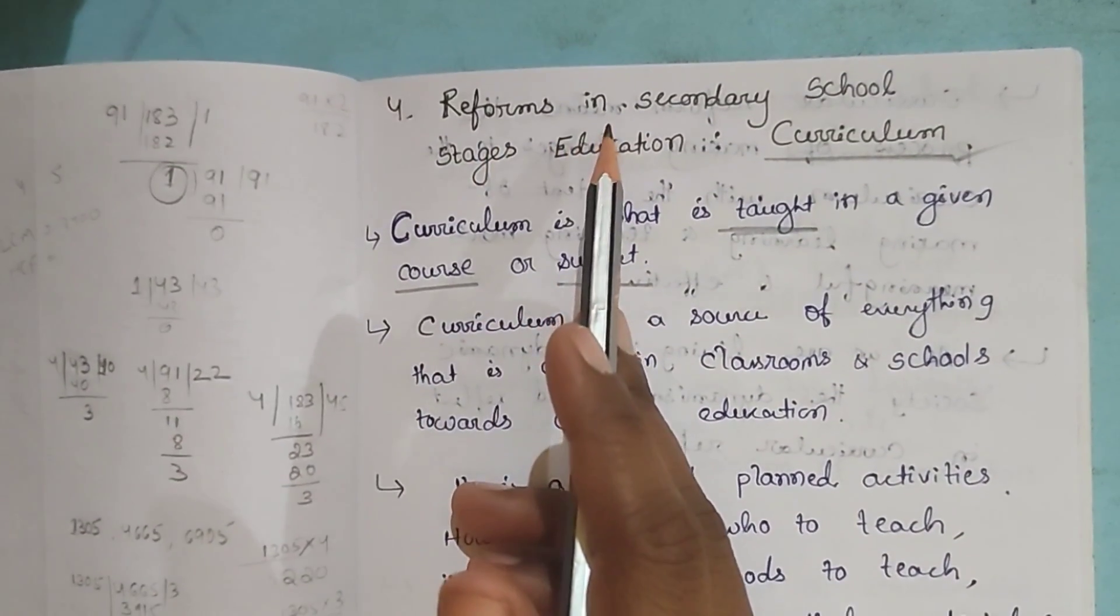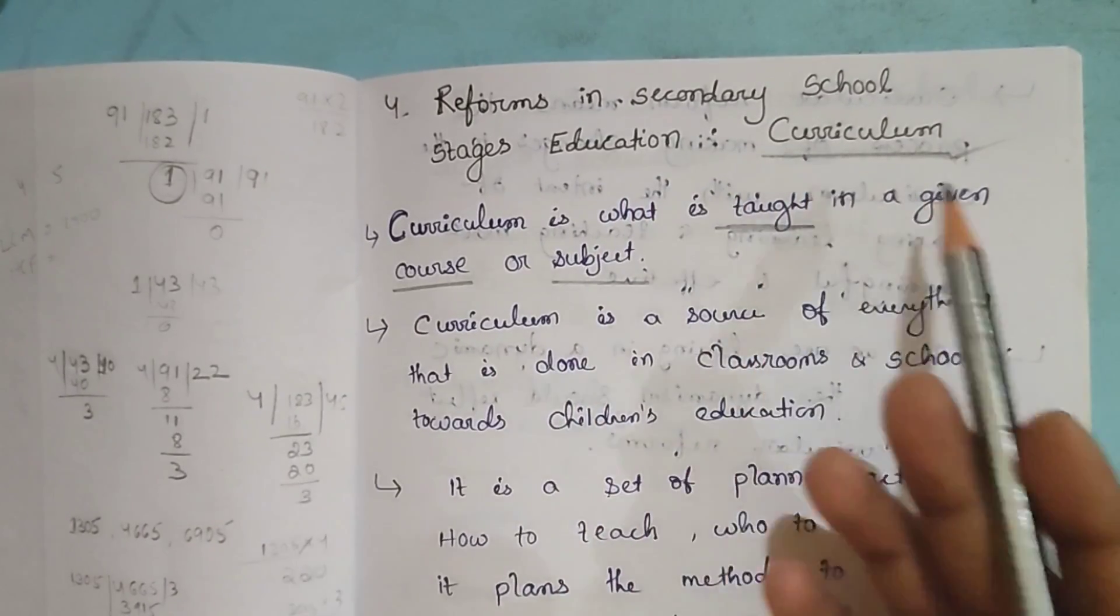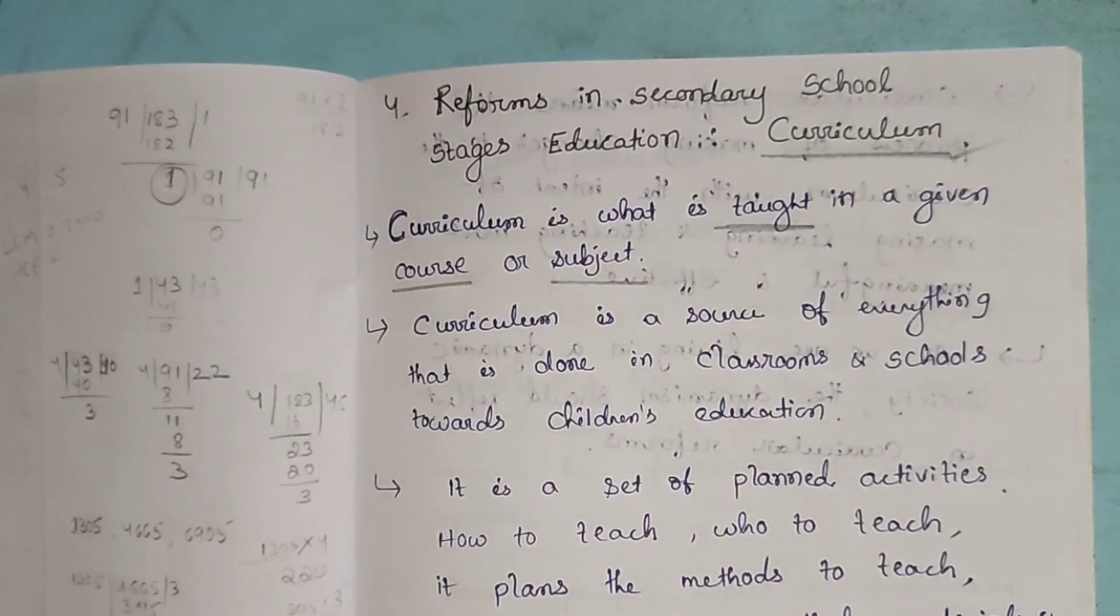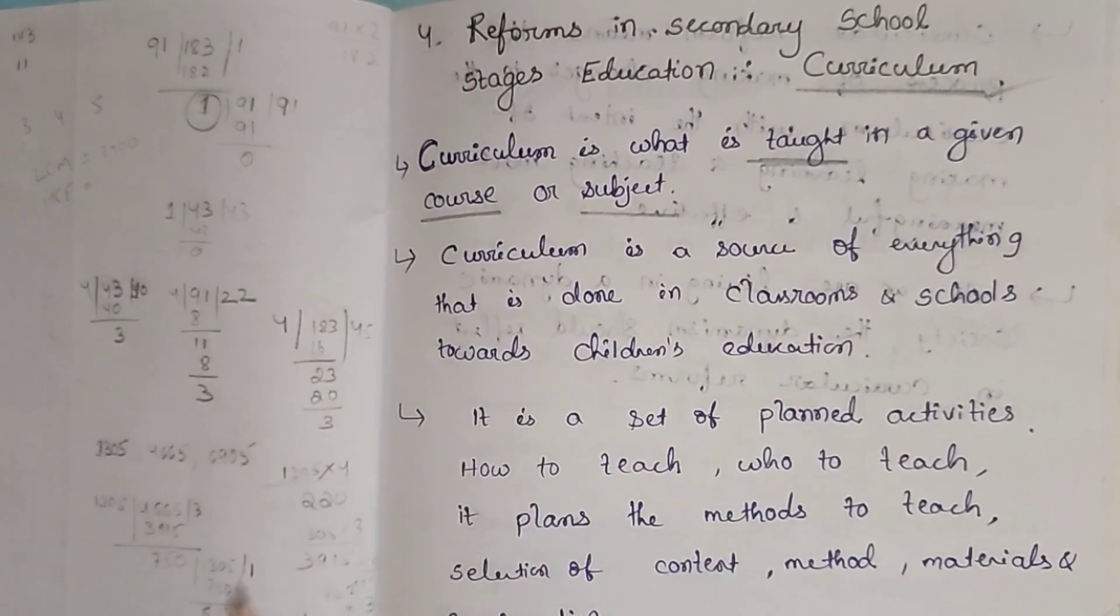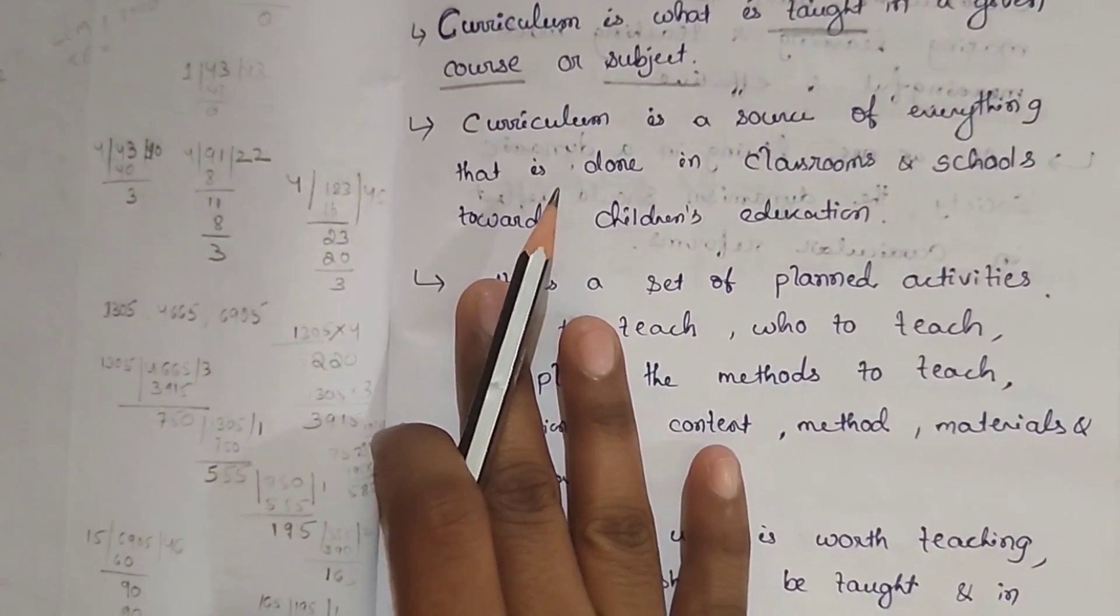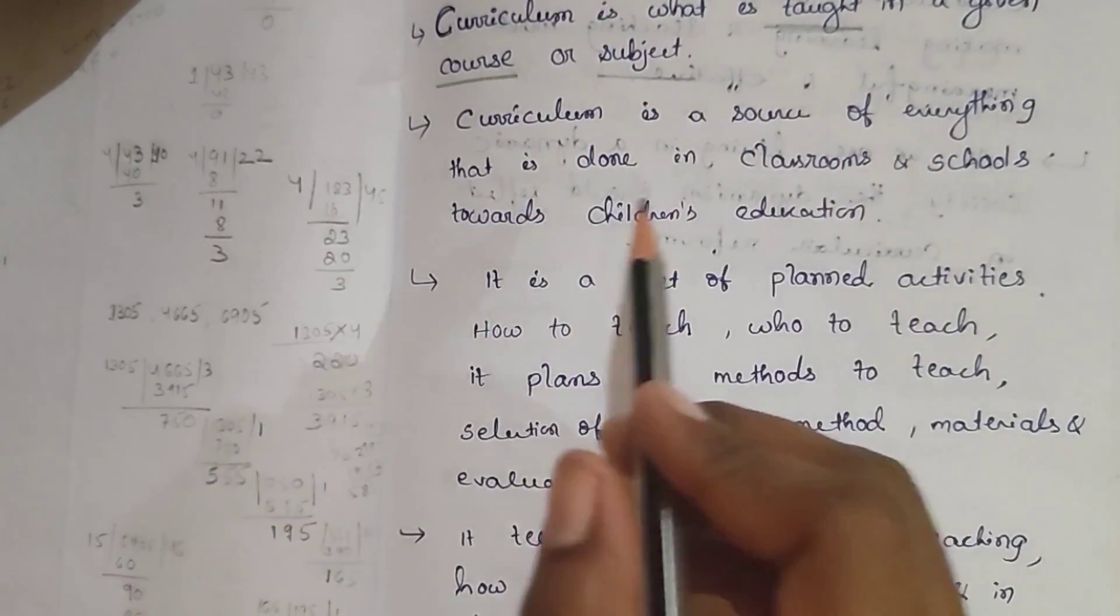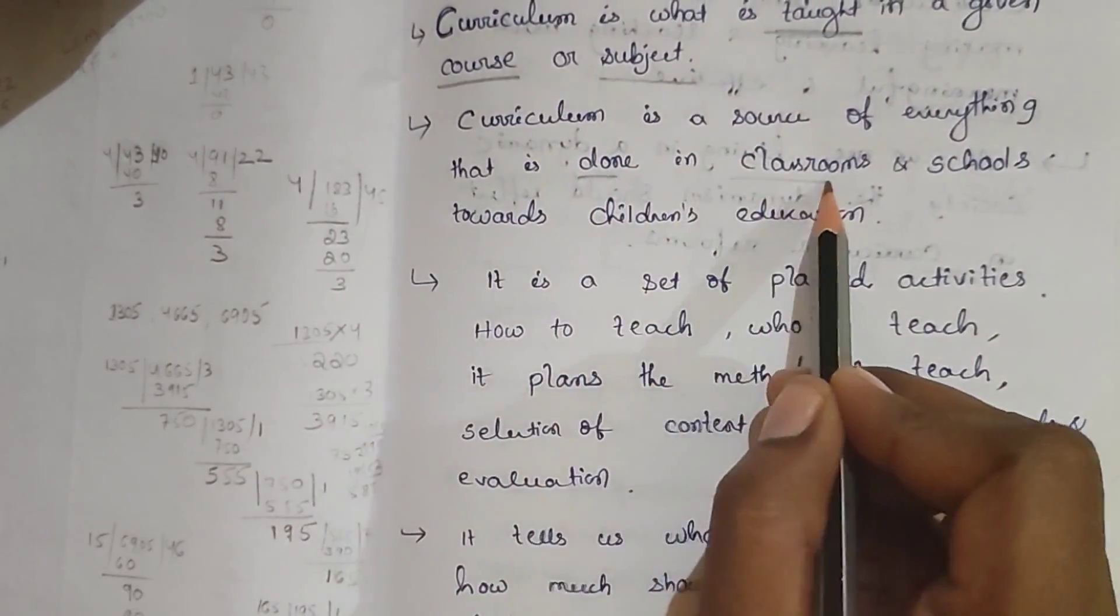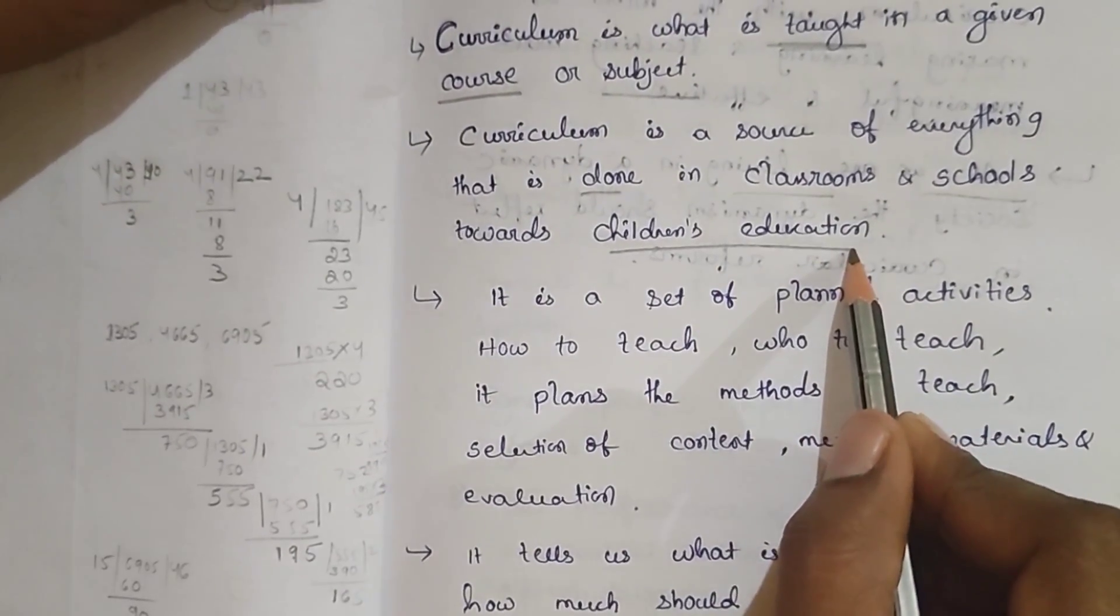We are studying reforms in secondary school curriculum stage of education. Curriculum needs some reforms, changes should happen. We have to change the old reforms to new curriculum according to the time, according to the modern society. Curriculum is a source of everything that is done in classroom and schools towards children's education.